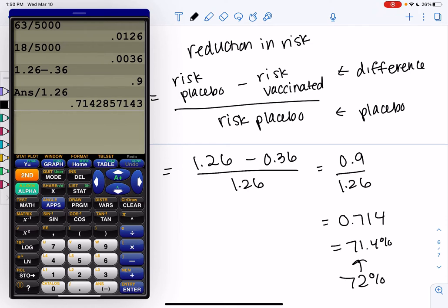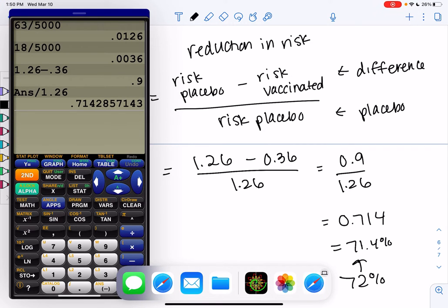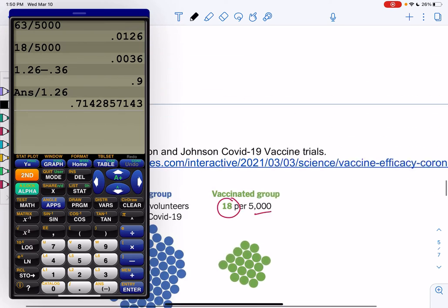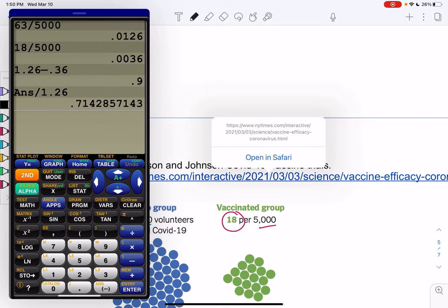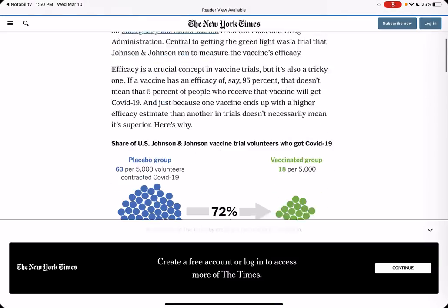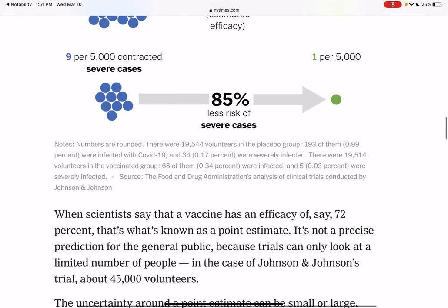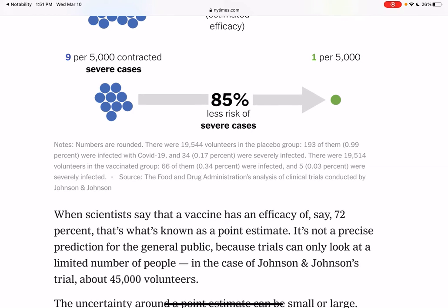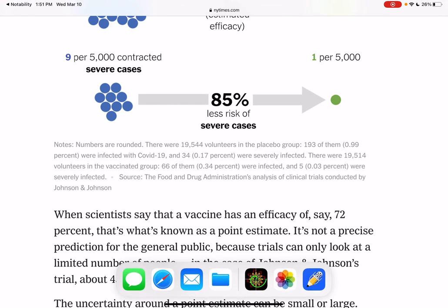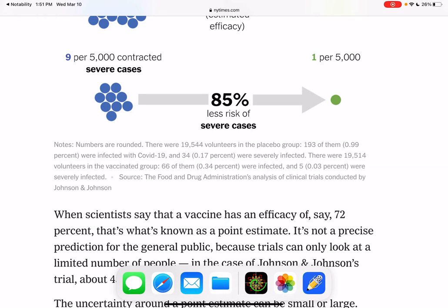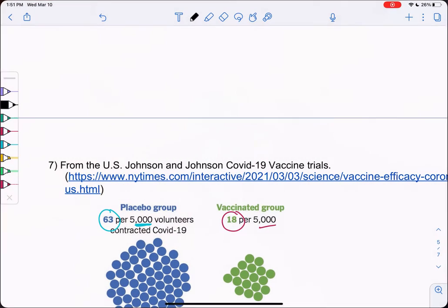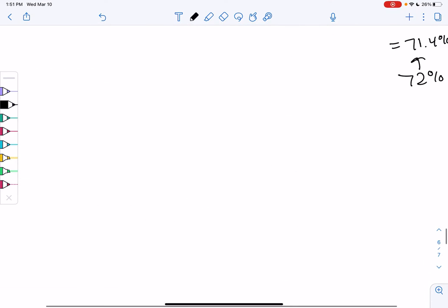So this is efficacy only for COVID overall. If you wanted to look back at that article, efficacy changes. So if we look at severe cases, let's actually calculate this one. So we have 9 out of 5,000 and then we have 1 out of 5,000 with the vaccine. And this one's really more important, right? Because if everyone's getting mild cases, then maybe it's not as big of a deal. We're trying to keep people out of the hospital. So let's look at the severe cases.